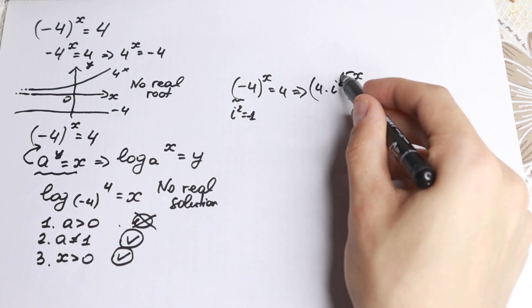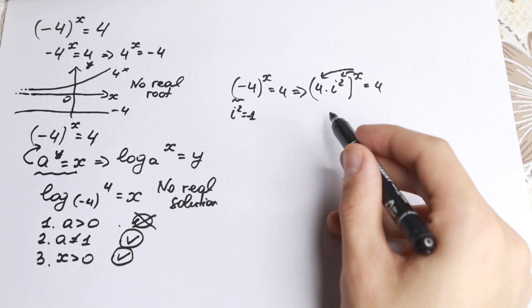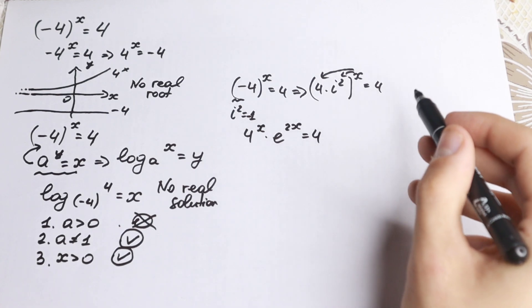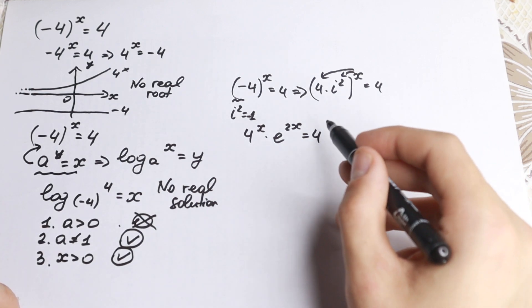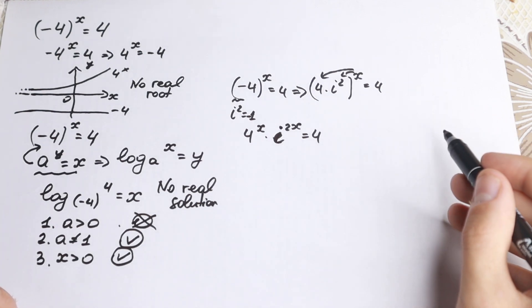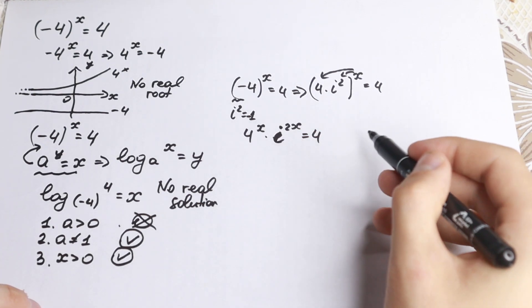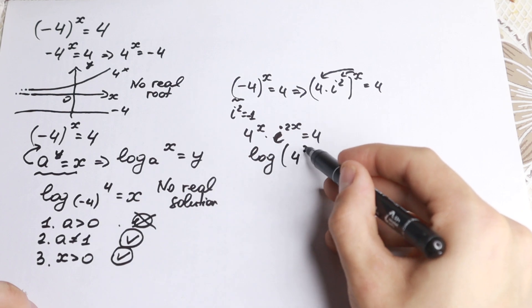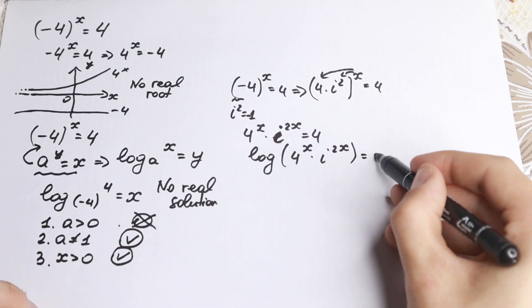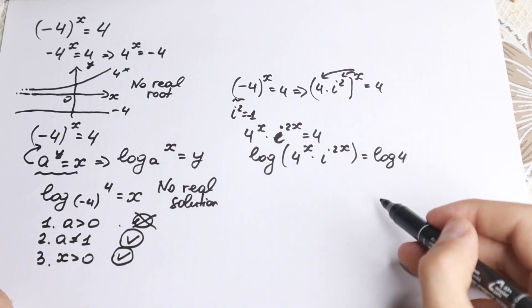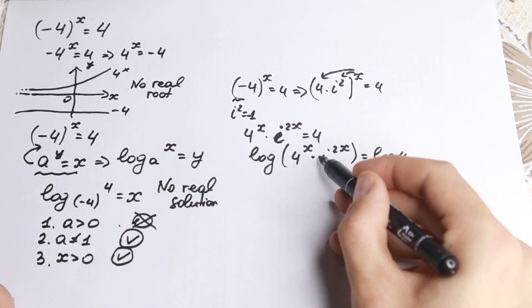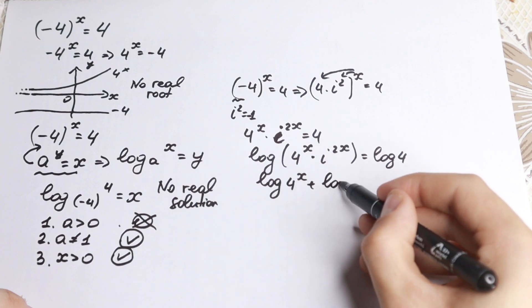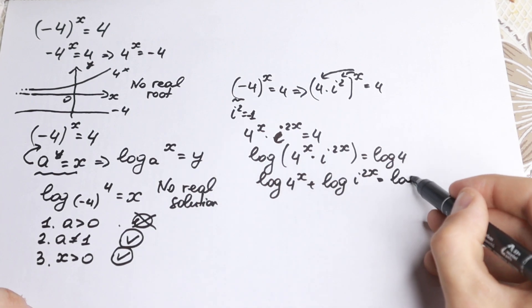If you know a little about power rules, the exponent x distributes, so we have 4 to the x times i to the power 2x equal to 4 — where i is the complex number. Now, since we have a product and need to find x, it's useful to take log on both sides: log of 4 to the x times i to the power 2x equals log 4. Using the log product rule, we can split this into a sum: log 4 to the x plus log i to the power 2x equals log 4.